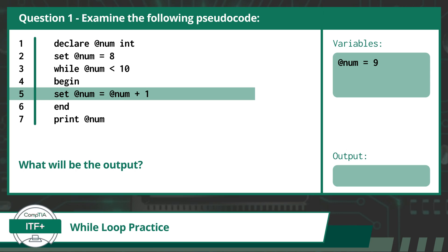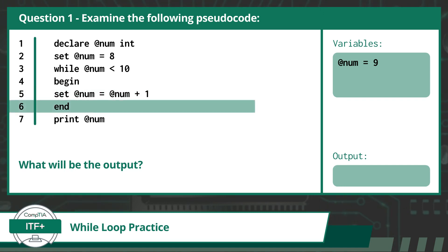Remember, this is a very important part of the while loop. Since the condition check of the while loop is based on the value of @num, if our loop does not provide a way for @num to be modified in some way that will eventually cause the condition to evaluate to false, we could find our code stuck in an infinite loop. On line 6, we have the word end to mark the end of the looped code statements.